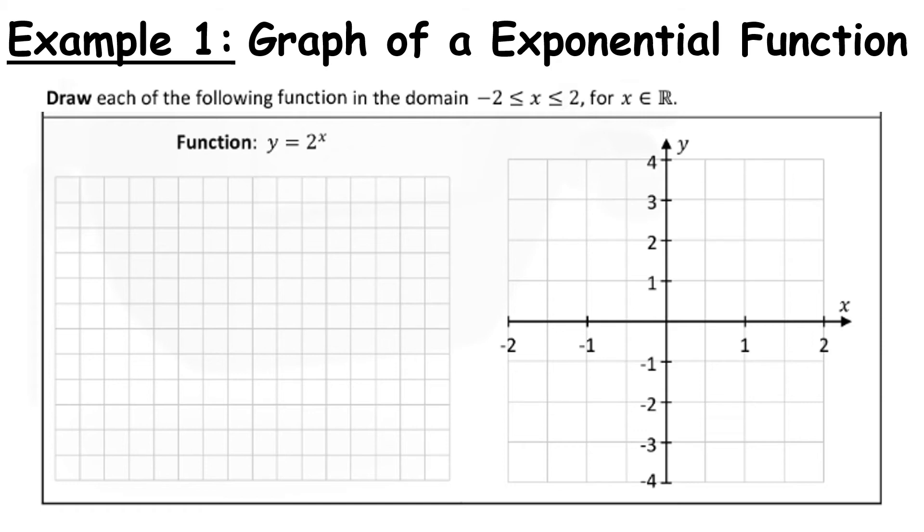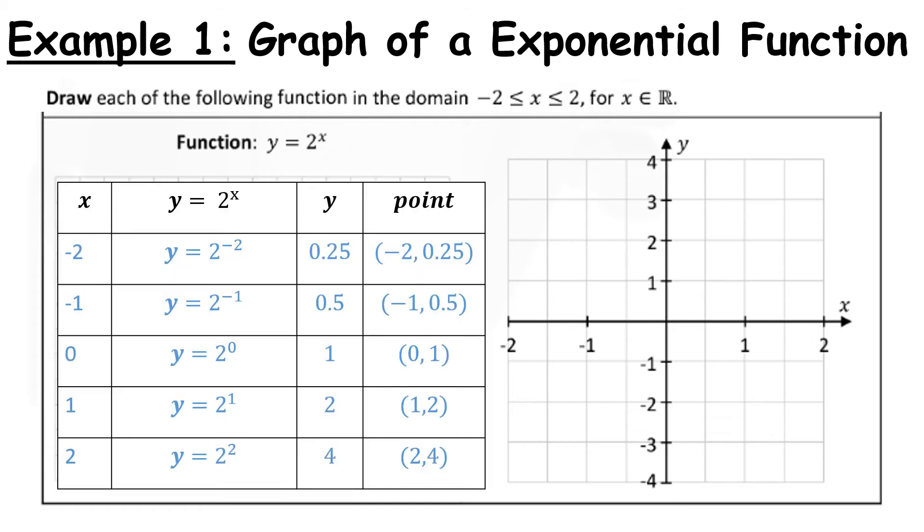Let's work with our table. Our first column is our input, the x's from -2 to 2. We then work the actual function itself. We substitute in our value of x or our input, we get our value for y, and we get our point.